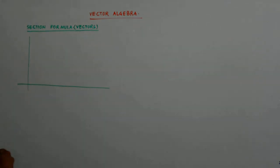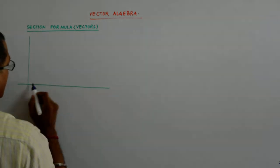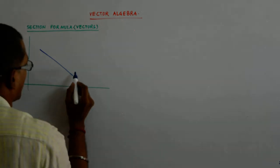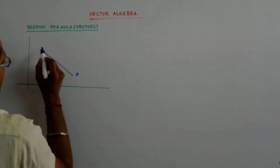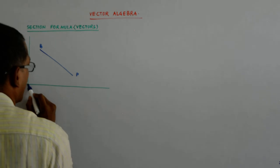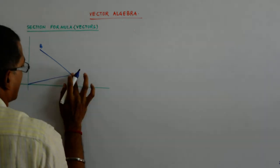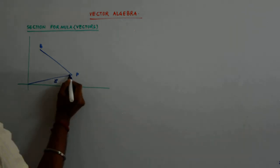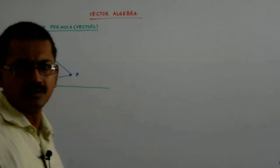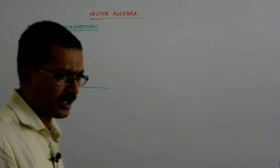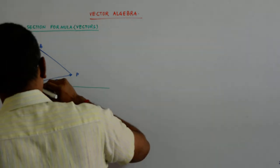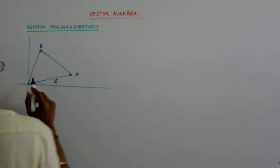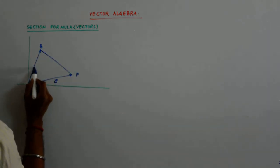See what happens, say this is my point, let us say this is P and this is Q and this is my position vector and I prefer to call it a, this is a position vector. I could have called it r1, I would have preferred r1 and here it is b.